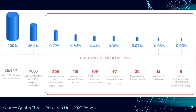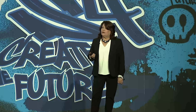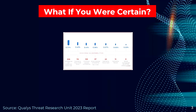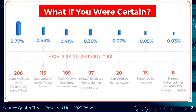This is a report that was just recently done by Qualys. Over 26,000 vulnerabilities were discovered just in 2023. If you were to look at this overall landscape of vulnerabilities, wouldn't it be nice if you were certain on the high-risk vulnerabilities in your environment so that you can really prioritize those patches and risk?